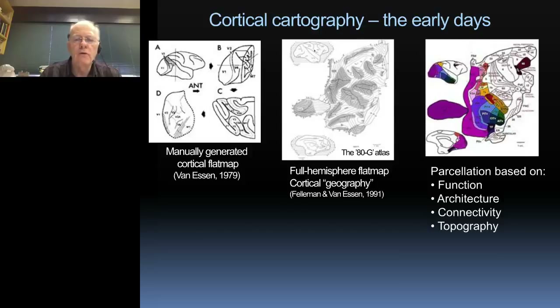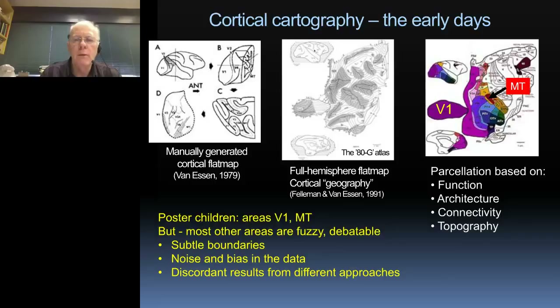I got frustrated by the challenges of looking at data only on one anatomical slice compared to another, so I literally used pencils and tracing paper to generate what we call flat maps of small patches of the cortex, and there are ways to use that approach to make flat maps of the entire cerebral cortex in the macaque monkey. A colorized version identified several dozen visual areas of the macaque monkey from the scientific literature, combining information from multiple methods to parcellate the brain based on differences in structure, function, architecture, connectivity, or topography.